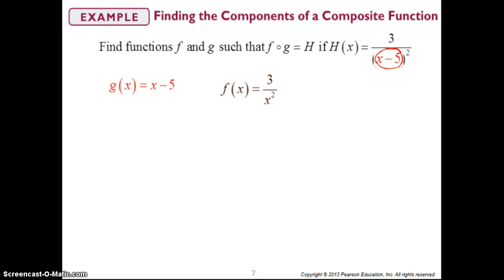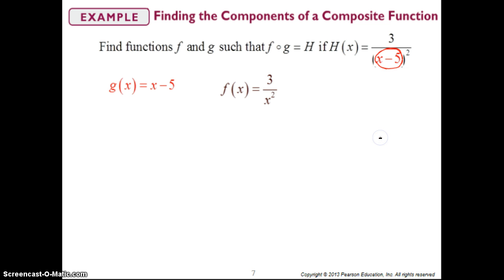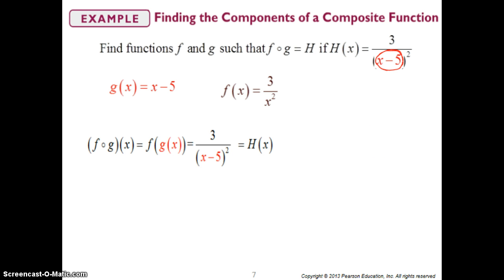So if g of x is x minus 5, then f of x is 3 over x squared, then you put the function back together. When you put the function back together, you see that you end up with 3 over x minus 5 squared.